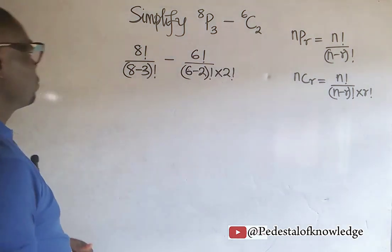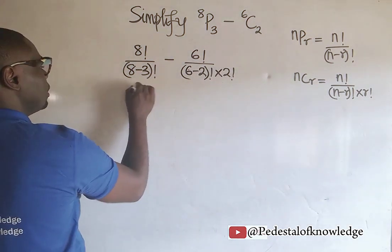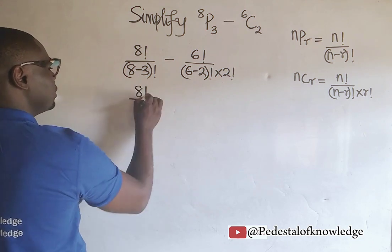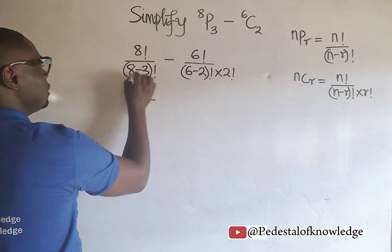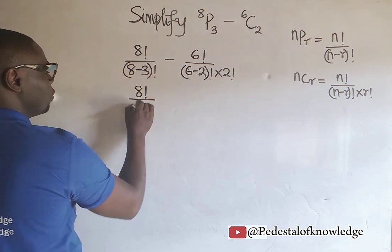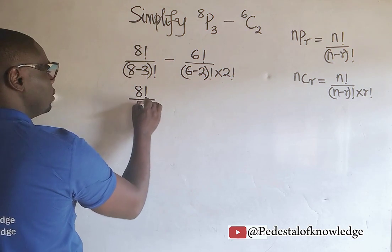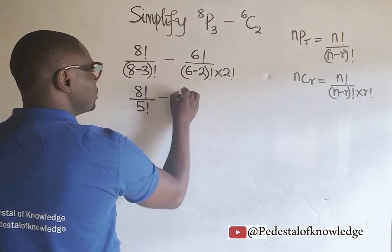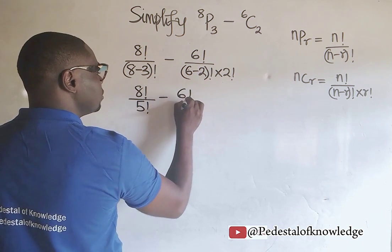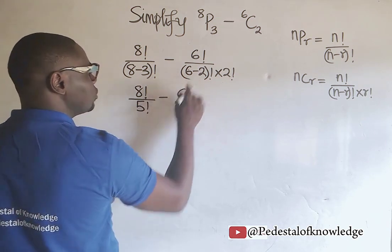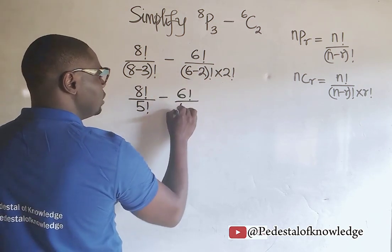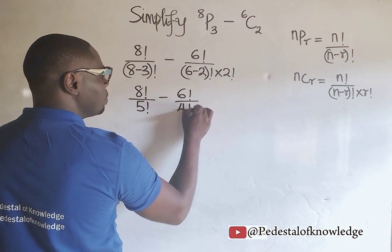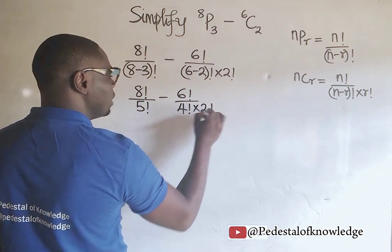This is equal to 8 factorial divided by 8 minus 3, which is equal to 5. So we have 5 factorial, minus 6 factorial divided by 6 minus 2, which is 4 factorial, multiplied by 2 factorial.